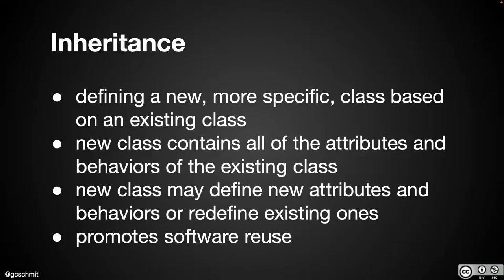The new class also inherits all behaviors — think Java methods — of the existing class. The child class has all of the same instance variables and methods as its parent class. In addition, the child can be specialized: it can declare new instance variables, new methods, and it can redefine the behaviors it inherits by overriding those methods. This is really powerful in object-oriented programming because it promotes a tremendous amount of software reuse — less code to write, debug, and maintain.